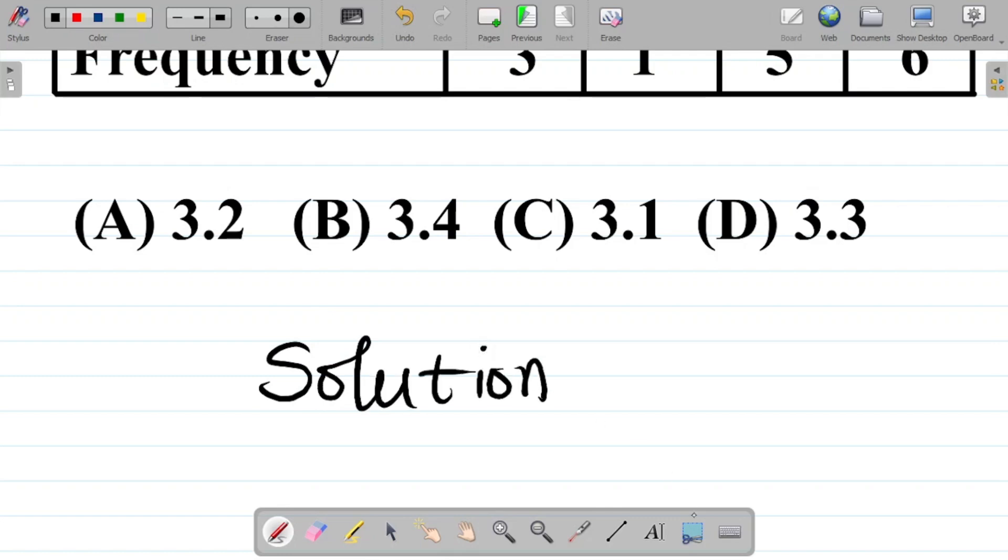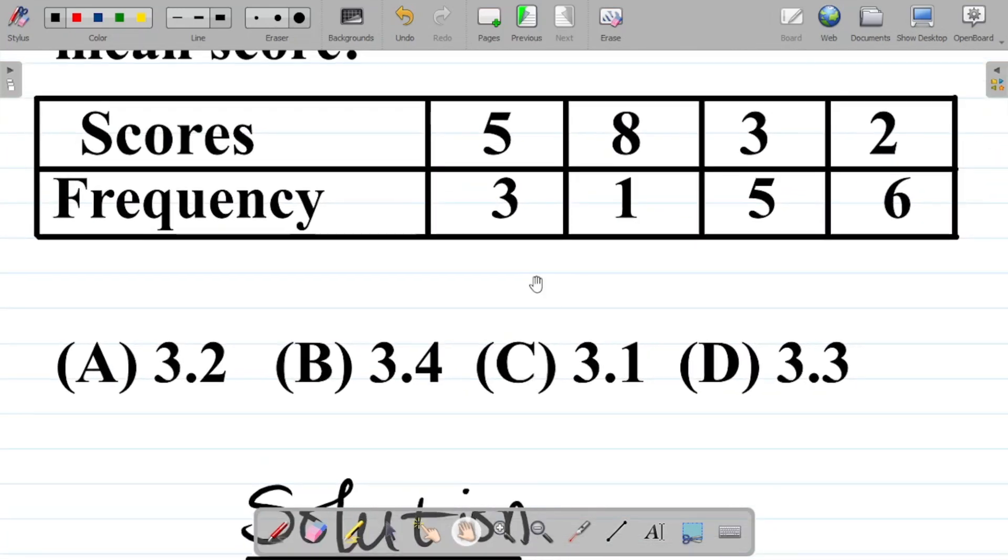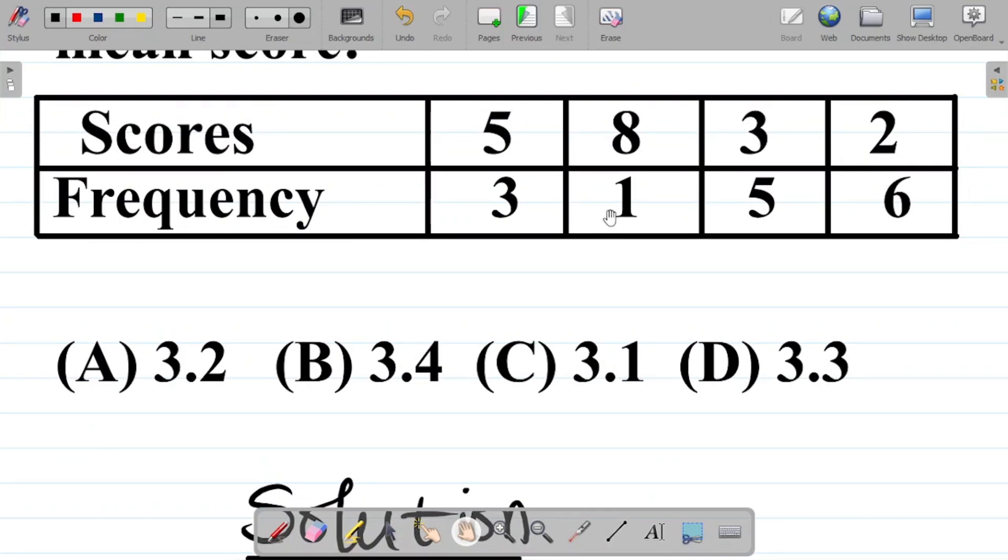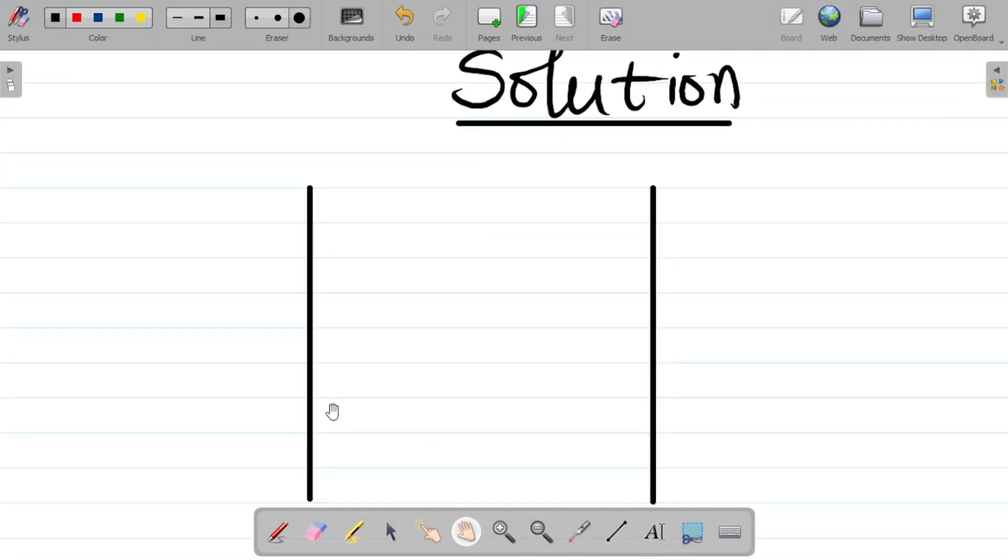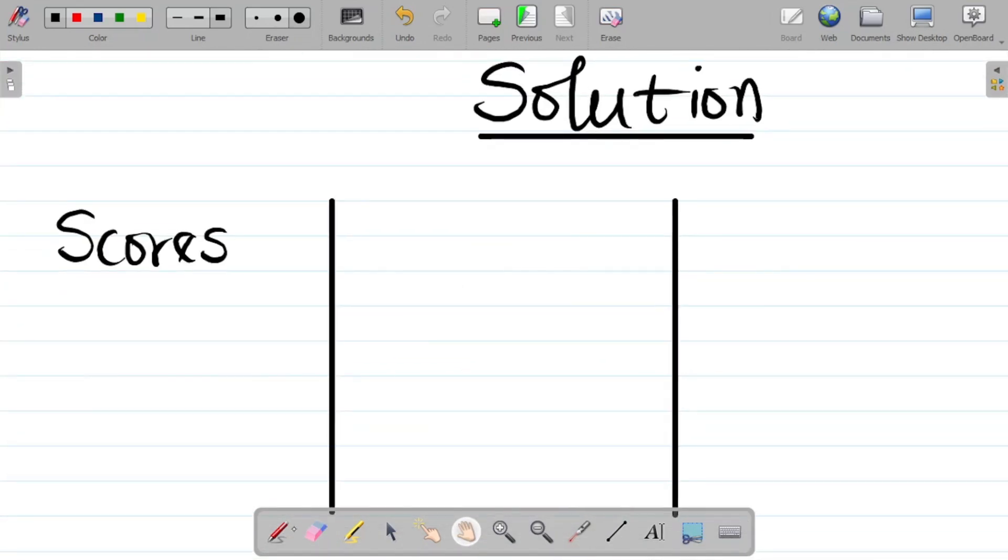Let's take the typical statistic method, which would be to form a table for this. Now, in forming a table, we'd have a table for the scores, a table for the frequency. So let's create columns. The first column there for score.